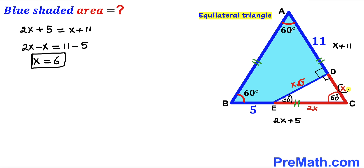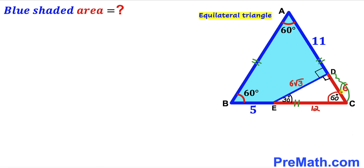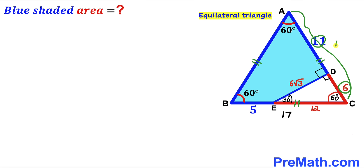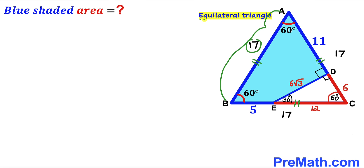With x = 6, we get 2x = 12 units and x√3 = 6√3. So CD = 6, EC = 12, and ED = 6√3. Checking: BC = 5 + 12 = 17 units, and AC = 6 + 11 = 17 units. Since this is an equilateral triangle, side AB is also 17 units.